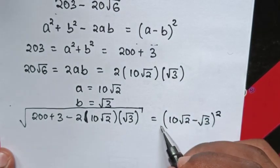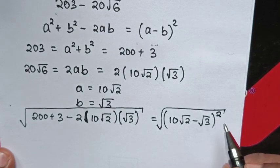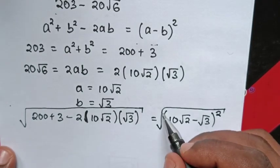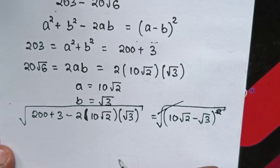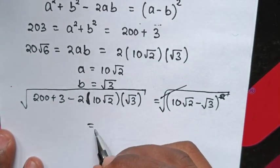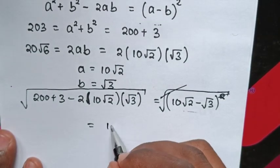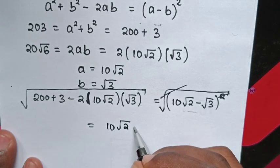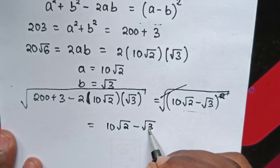Then we will apply square root again. This square root will cancel the square. Therefore, our answer will be equal to 10 square root of 2 minus square root of 3.